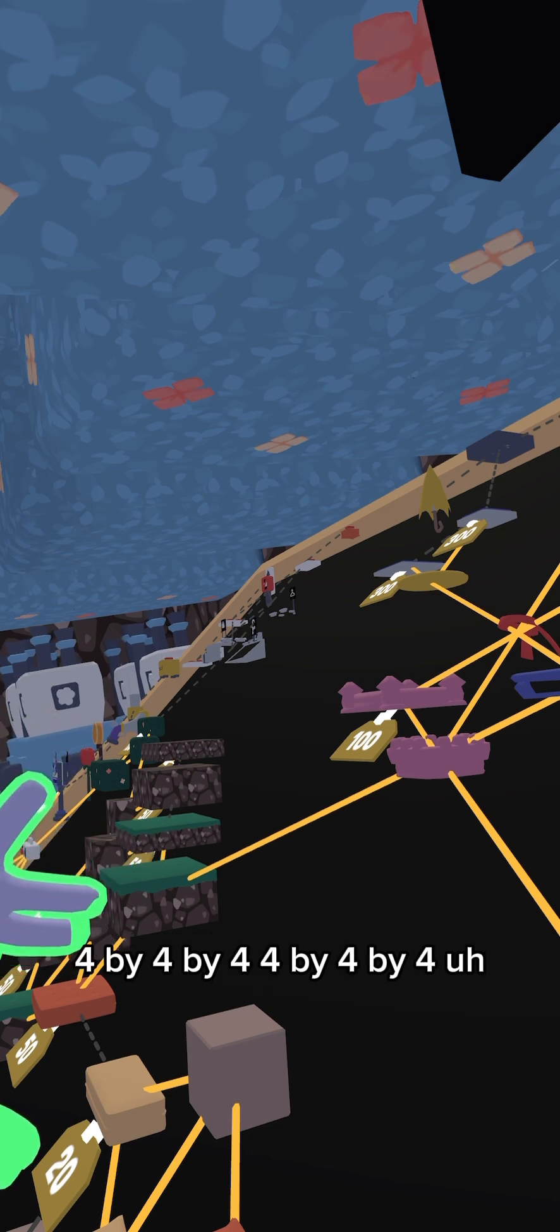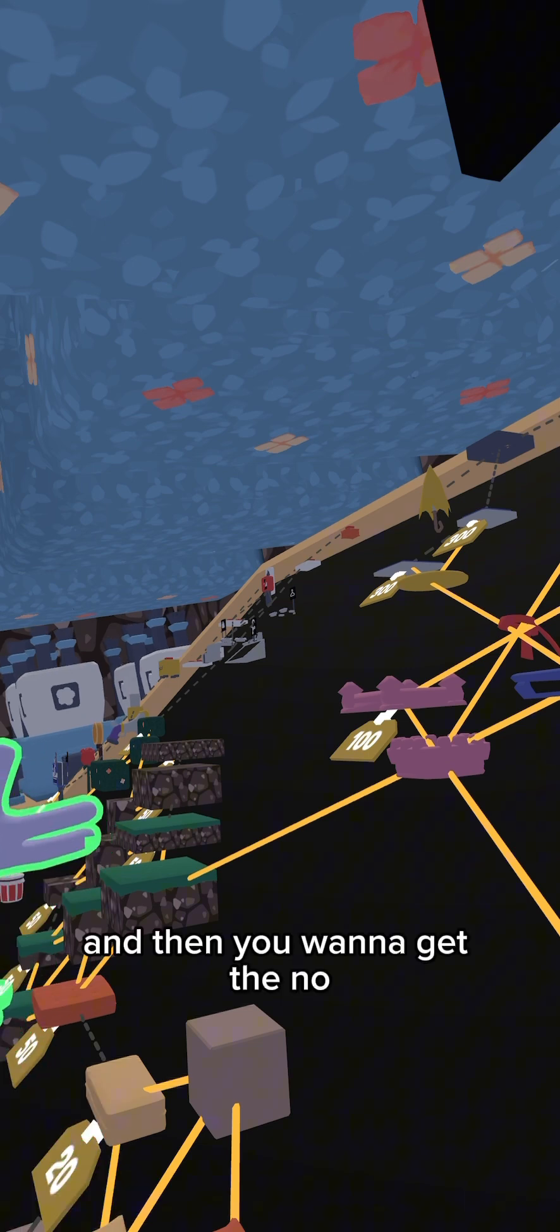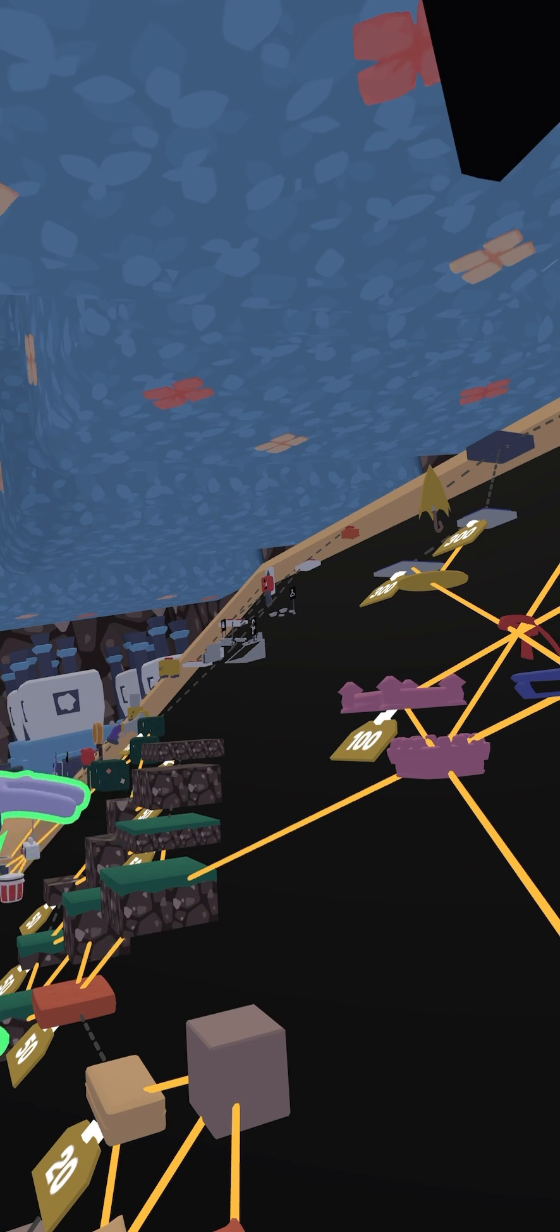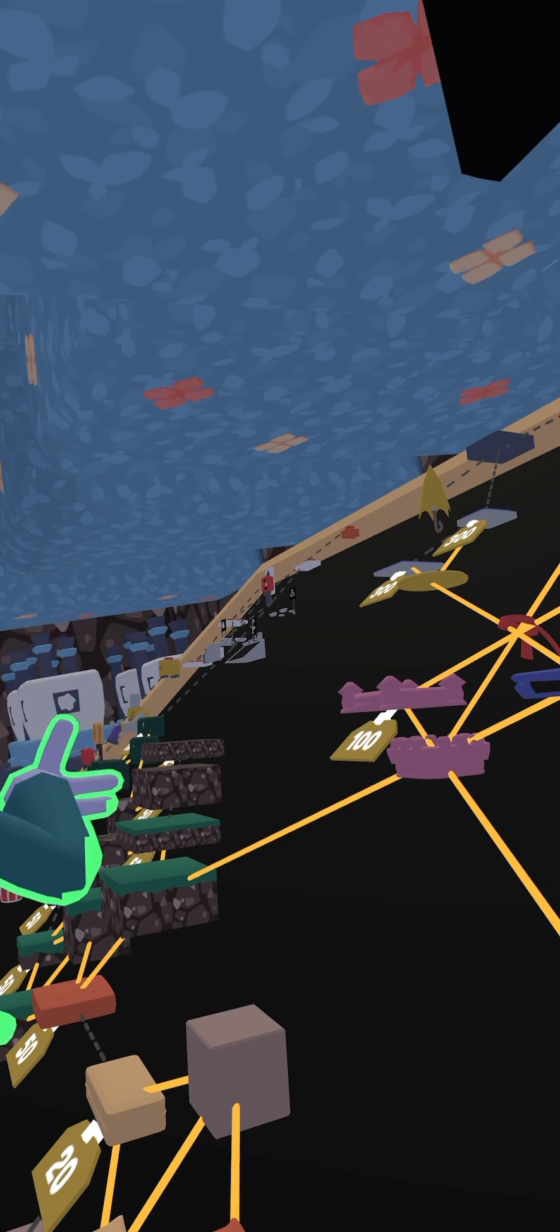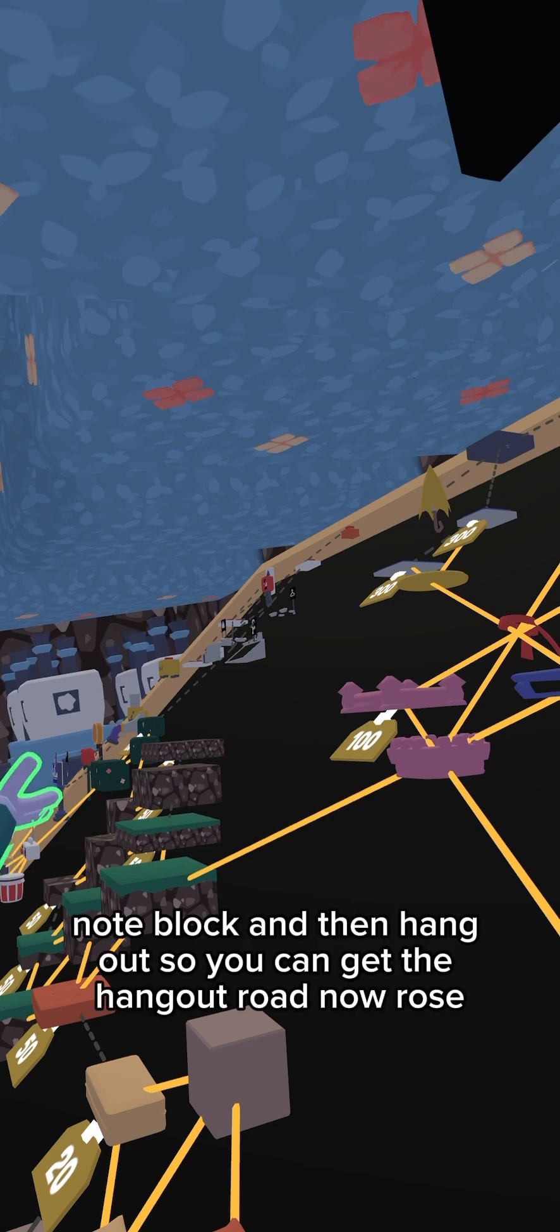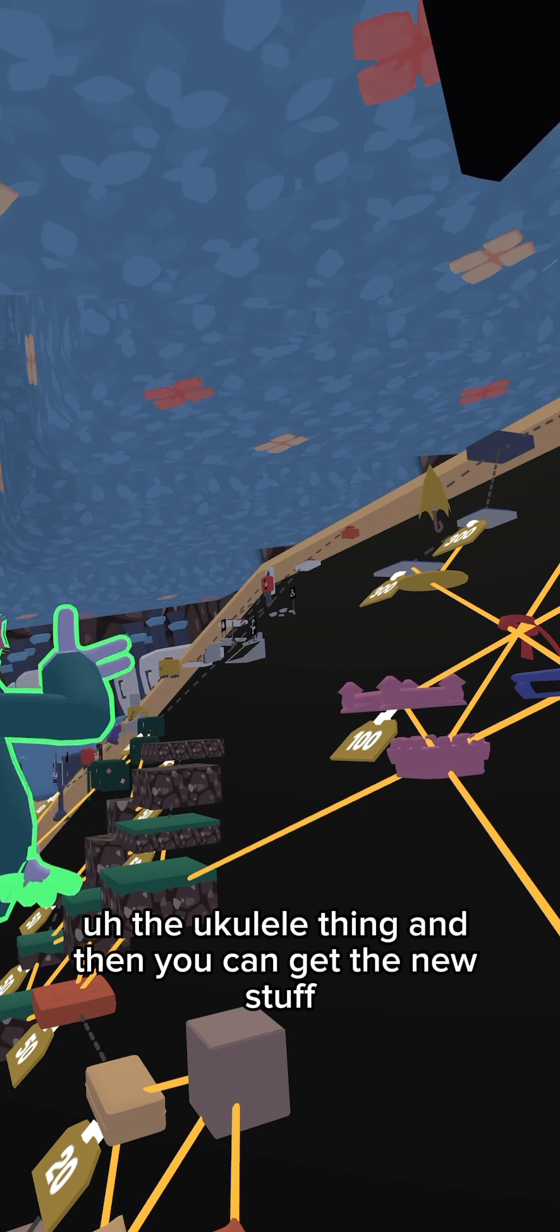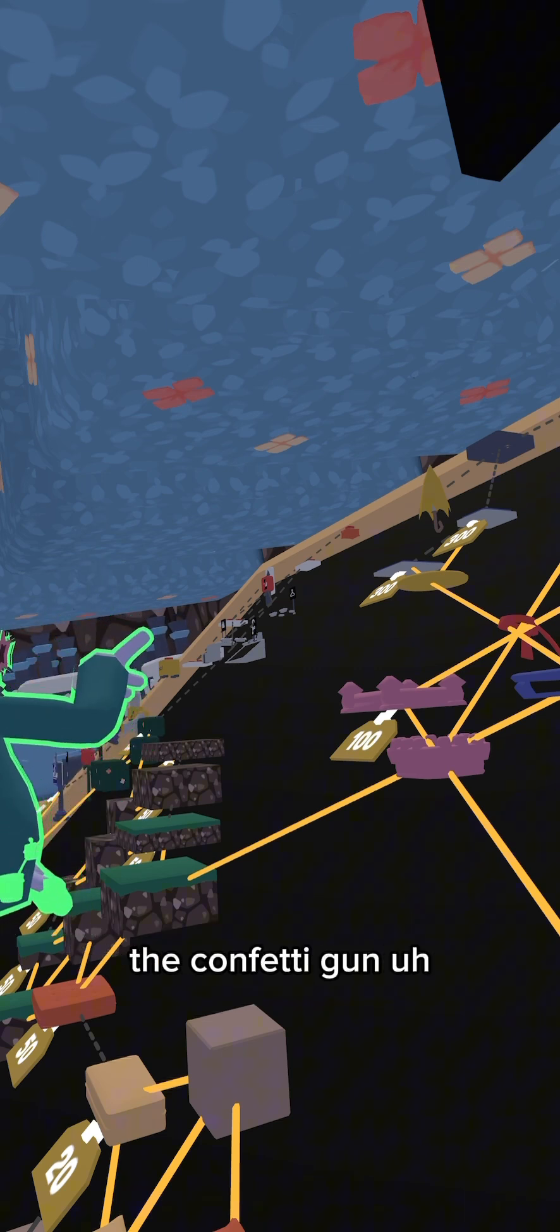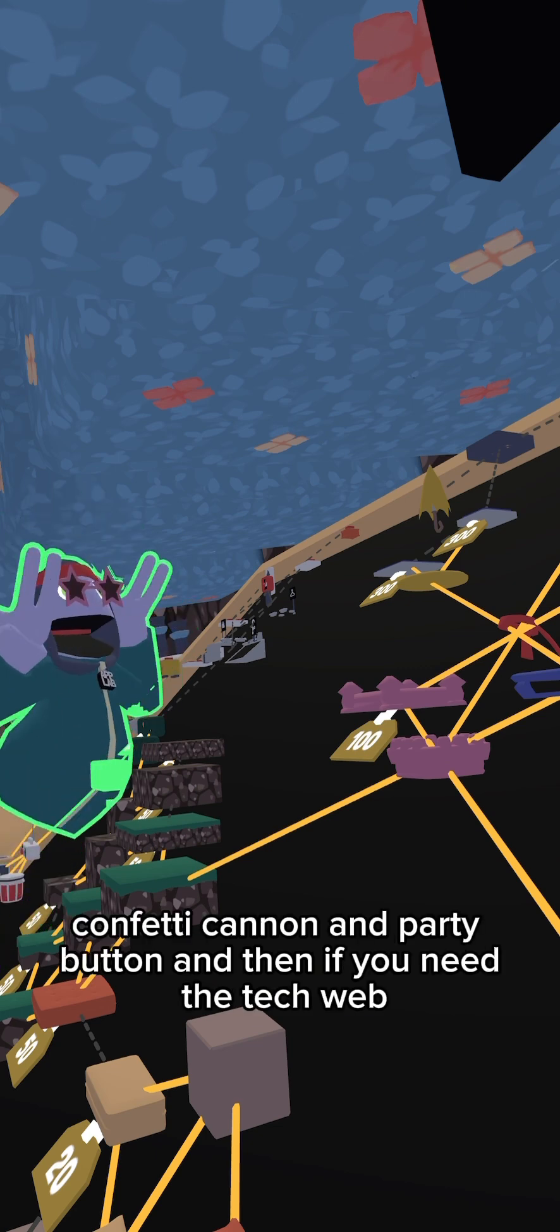And four by four by four, four by four. And then you want to get the two by two by two and the small bush, big bush, then you want to get radio, no block, and then hangout so you can get the hangout mode now. The roses, the ukulele thing, and then the new stuff - the confetti gun, confetti cannon and party button. And if you need the tech web...